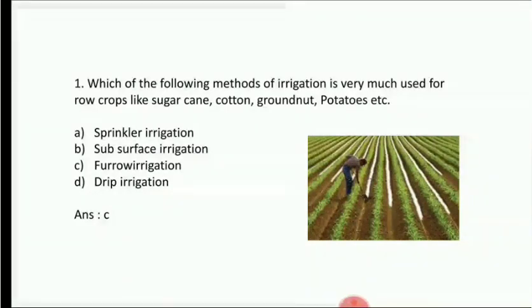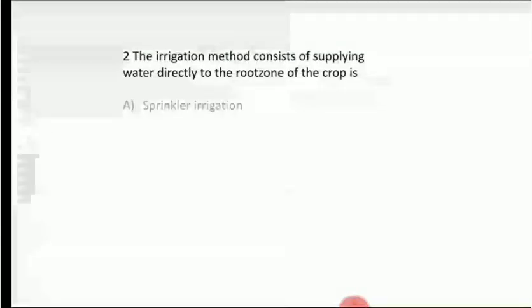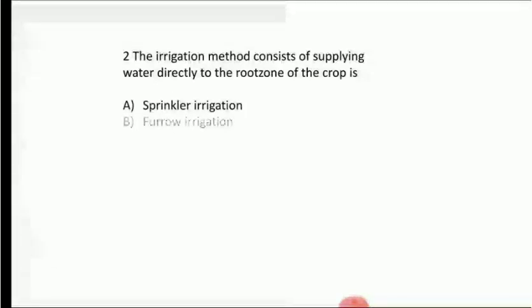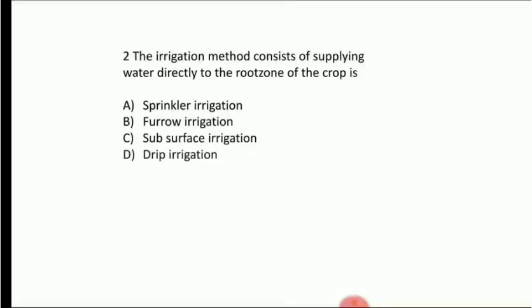Furrow irrigation is suitable for sugarcane, cotton, groundnut, and potatoes. The irrigation method that consists of supplying water directly to the roots of the crop — Option A: sprinkler irrigation, Option B: furrow irrigation, Option C: subsurface irrigation, Option D: drip irrigation. The most suitable answer is subsurface irrigation.